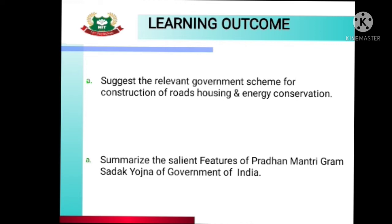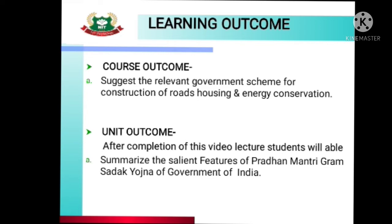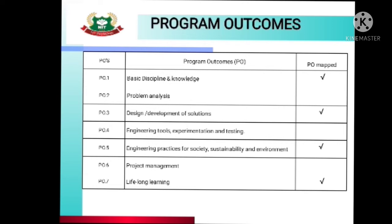Now, learning outcomes. The course outcome is to suggest the relevant government scheme for construction of roads, housing and energy conservation. The unit outcome is to summarize the salient features of Pradhan Mantri Gram Sadak Yojana of Government of India. Program outcomes mapped are PO1: Basic discipline and knowledge; PO3: Design, development and solutions; PO5: Engineering practices for society, sustainability and environment; and PO7: Lifelong learning.